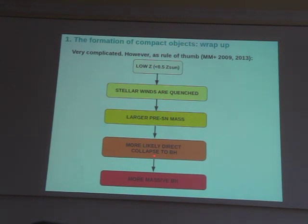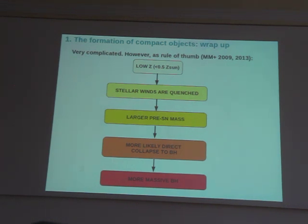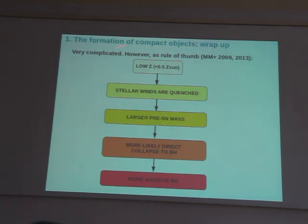So if we have a metal-poor star where stellar winds are less important, it will have a larger pre-supernova mass than a metal-rich star with the same initial mass, making it more likely to avoid a supernova and directly collapse to a black hole. This black hole — forming not from an explosion but from a direct or quiet collapse — will be more massive than average. The details are very complicated and depend dramatically on which core collapse supernova model and stellar evolution scenario you adopt.